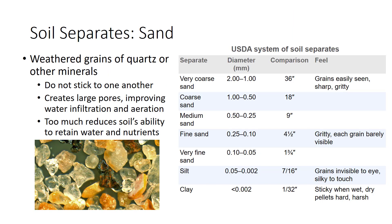Soil scientists divide mineral particles into size groups called soil separates and define three broad classes: sand, silt, and clay. These three together make up the fine earth fraction of soil used to determine texture. Larger particles, such as gravel, are considered coarse fragments and are not considered in texture. The table names the separates and gives their sizes according to the system adopted by the United States Department of Agriculture.